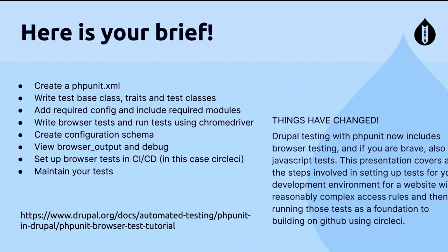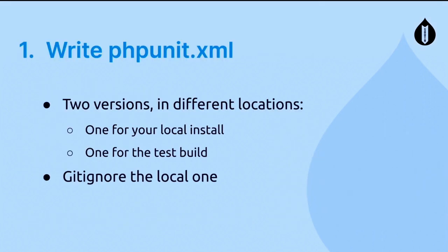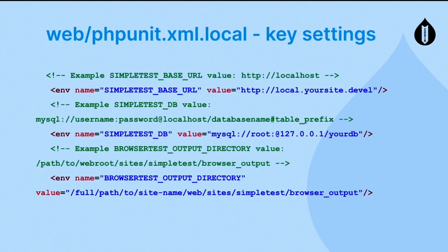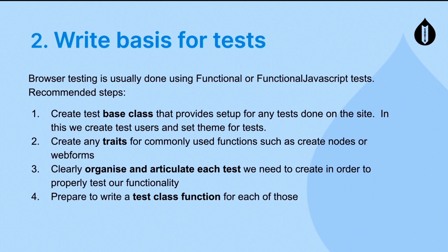Drupal.org has very good documentation on setting up PHPUnit browser tests. For PHPUnit config, we write two versions in two different locations — one for local install, one for the test build — and we get to ignore the local one. The key settings are your base URL, database connection, and browser output. We usually use functional or functional JavaScript tests, and we start by creating a test base class that will provide setup for any tests done on the site.